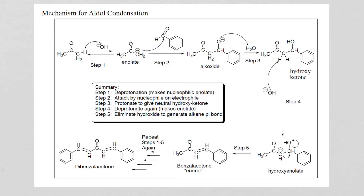It has that hydroxide group but it's missing the proton, so we call it alkoxide. The next step is going to be the deprotonation of that alkoxide group by water. Now we have a compound known as a hydroxy ketone. We have the ketone group right here, the hydroxide group, and we are halfway to making our benzal acetone — halfway through our aldol condensation.